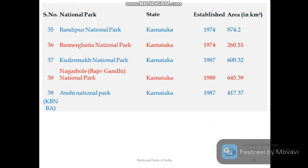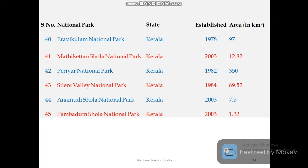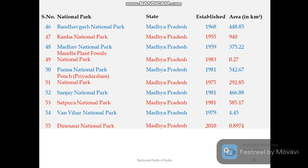Karnataka has five national parks: Bandipur, Bannerghatta, Kudremukh, Nagarhole (also called Rajiv Gandhi), and Anshi National Park. Kerala has six national parks: Eravikulam, Mathikettan Shola, Periyar, Silent Valley, Anamudi Shola, and Pambadum Shola National Park.